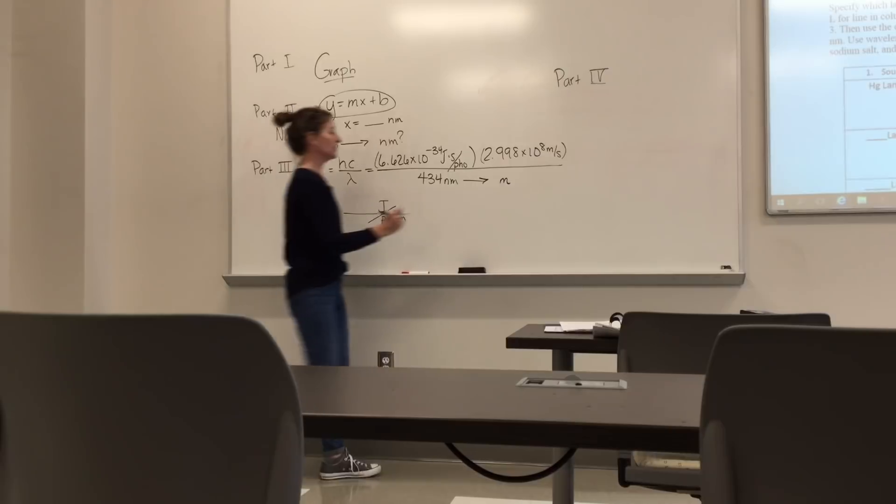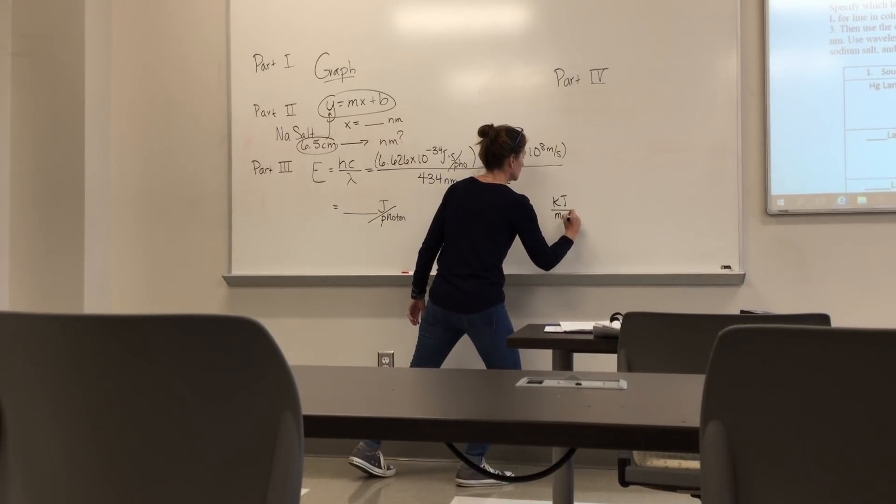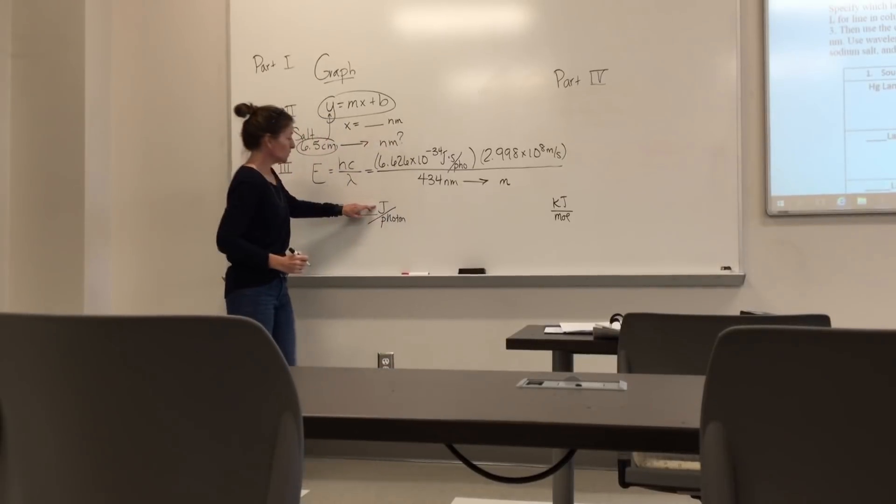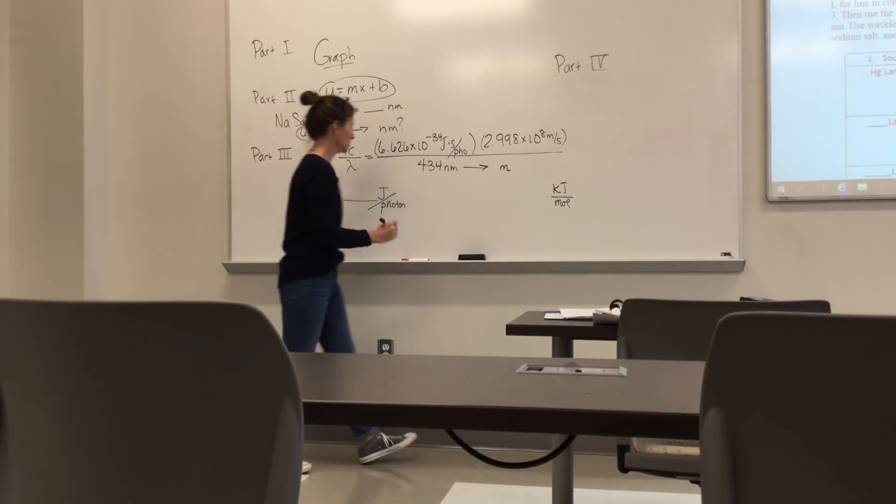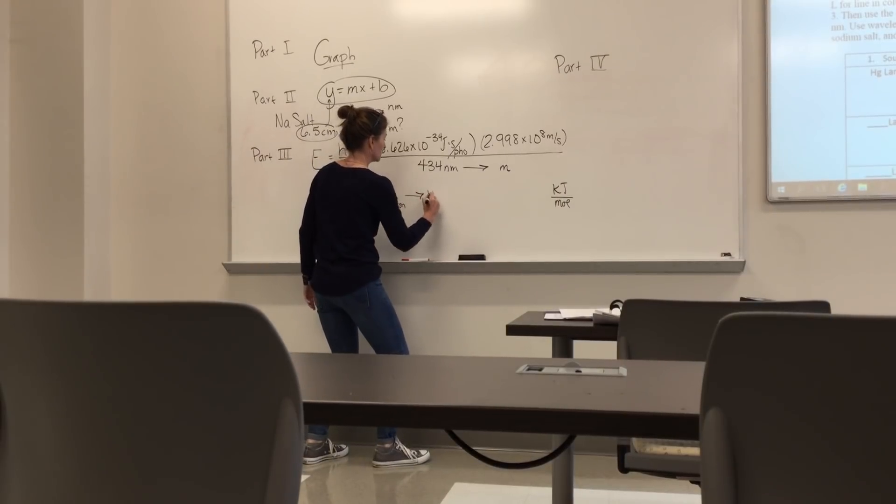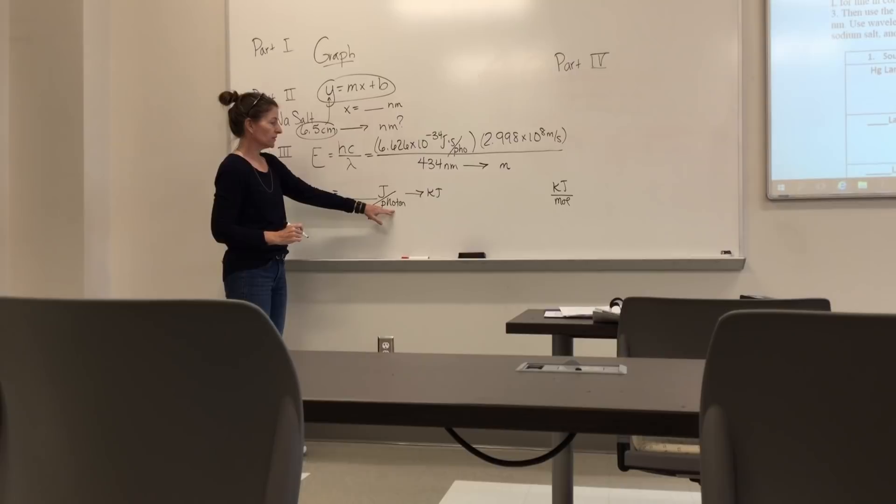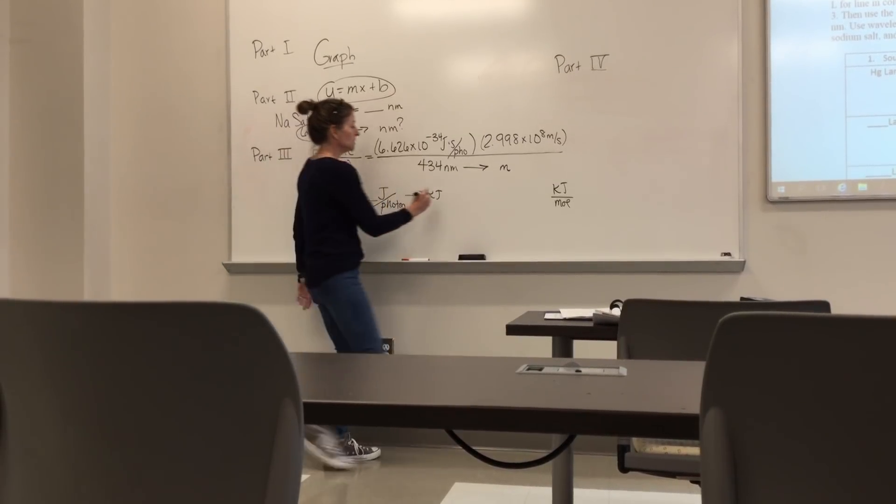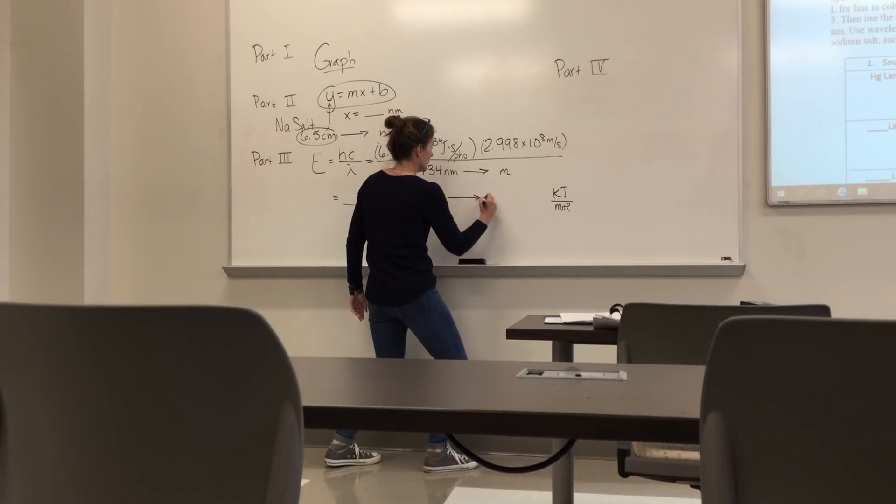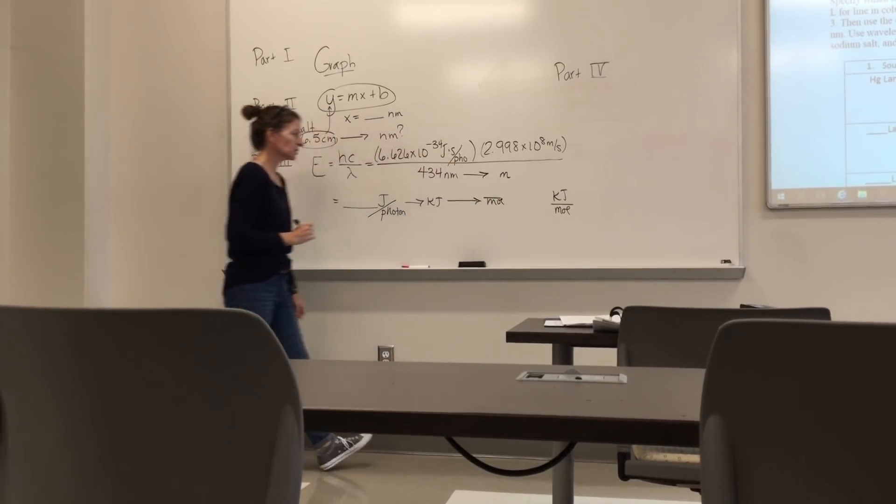Now remember, we want to finish with kilojoules per mole of photon. So you can see we've got to get from joules to kilojoules, which is a conversion, and you should know how to do that. We've also got to get rid of this photon and we want to get to moles. So you need to do that conversion as well. So essentially, you're going to get to per moles here, or moles to the negative one.